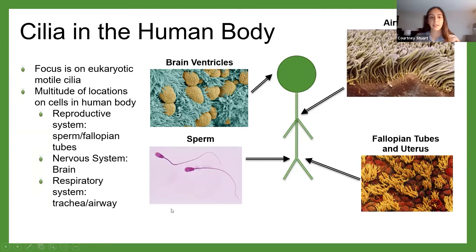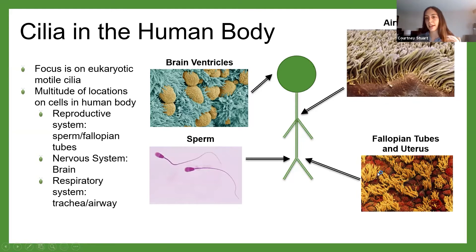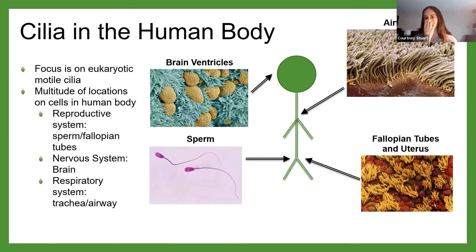Some of you guys might be familiar with cilia, most commonly in sperm. The sperm tail — you might have heard it referred to as a flagella. I'm going to use flagella and cilia interchangeably in this talk. These sperm tails are used to move the sperm to the egg for fertilization. Conversely, we also have cilia in the egg donor, in the fallopian tubes, moving that egg down into the uterus to allow for fertilization. In the brain, we have cilia in the brain ventricles, which allows for our cerebral spinal fluid to flow naturally. As well as in our airways, we have cilia that move the debris from our upper respiratory tract so that we don't have infection. So cilia are found everywhere in the body — they're super important.